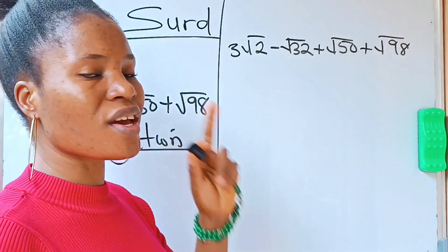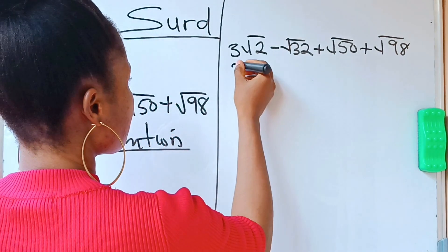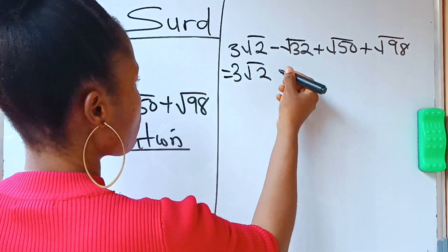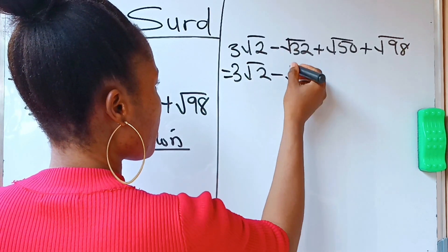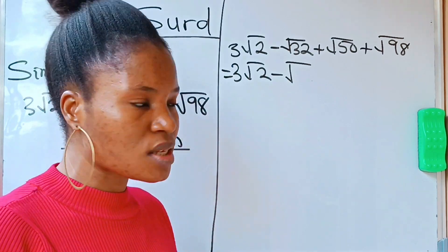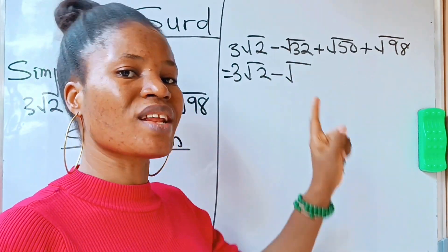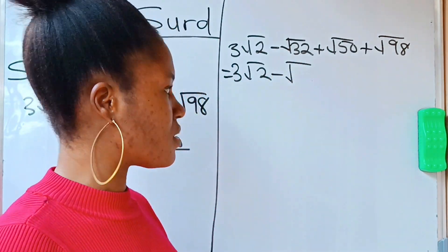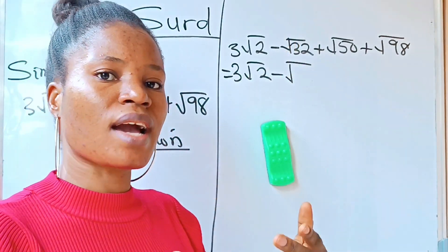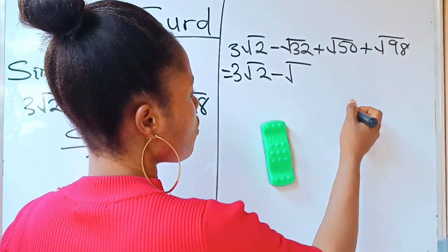This 3√2 is already in its simplest form, so we write it as is. Root 32 is not in its simplest form. Looking at 32, how do we get the two numbers we are going to use to simplify it?